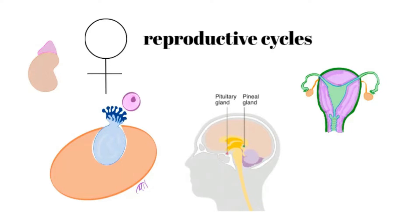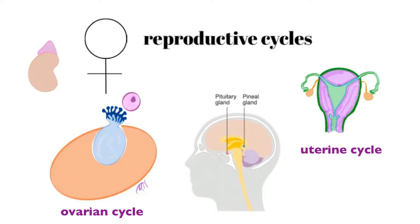Let's continue talking about reproduction, specifically the female side and two different cycles: the uterine cycle and the ovarian cycle. The uterine cycle involves changes within the endometrium, specifically the stratum functionalis, which includes menses and the rebuilding of that stratum functionalis. The ovarian cycle culminates with the release of the egg from the ovary — ovulation — and has two phases: the follicular phase and the luteal phase.